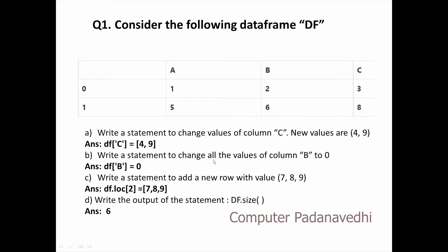Write a statement to change all the values of column B to 0. B is set to 0 — df['B'] equals 0. Write a statement to add a new row with values 7, 8, 9. Here we have 7, 8, 9.